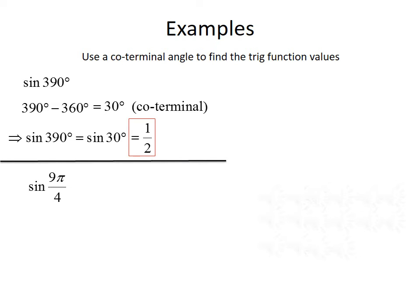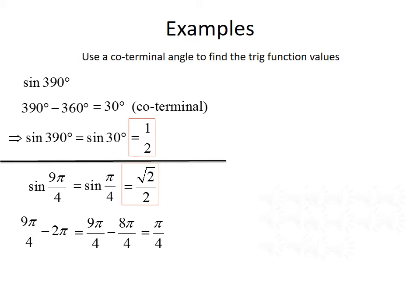Next, let's consider the sine of 9π/4. Since 9π/4 is greater than 2π, we subtract 2π. Rewriting 2π as 8π/4, we get 9π/4 minus 8π/4 equals π/4 as our coterminal angle. So sine of 9π/4 equals sine of π/4, which is √2 over 2.